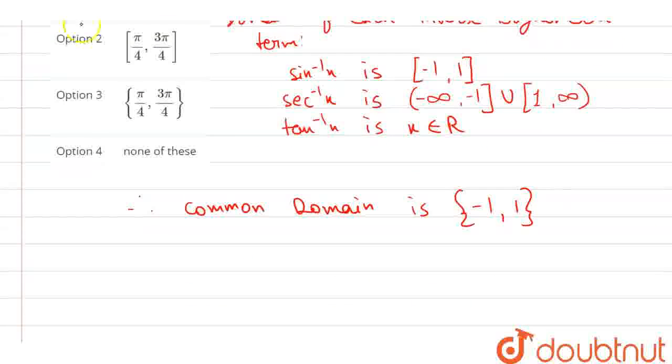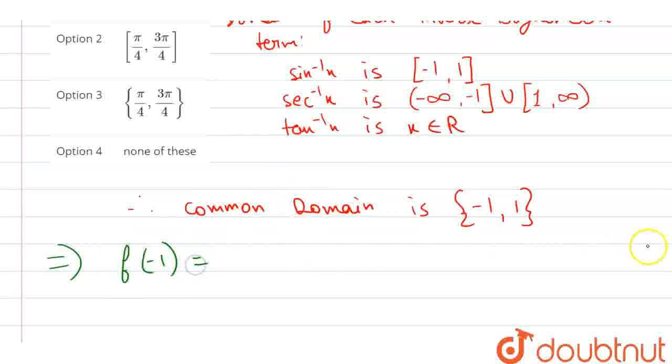Now, for finding range, we put these values in f(x). Firstly, f of minus 1. Sin inverse minus 1 is minus pi by 2, I'm directly writing it, plus tan inverse minus 1 is minus pi by 4, plus sec inverse minus 1 is pi. Taking LCM, we get this answer pi by 4.